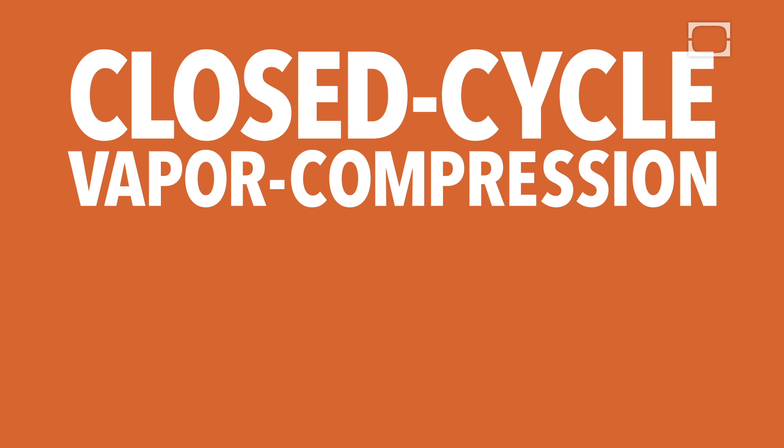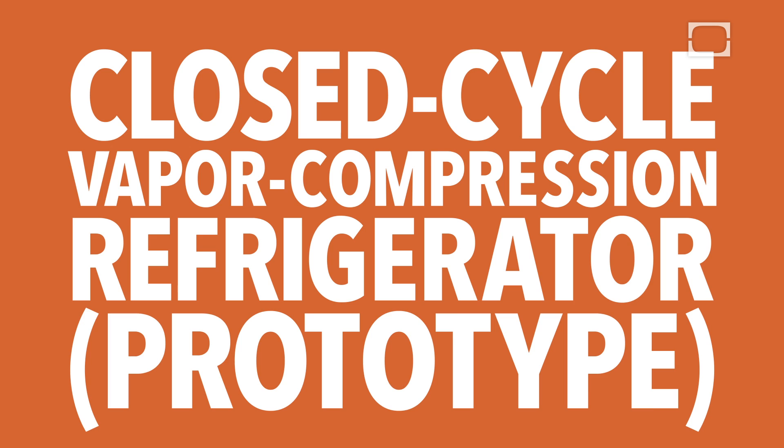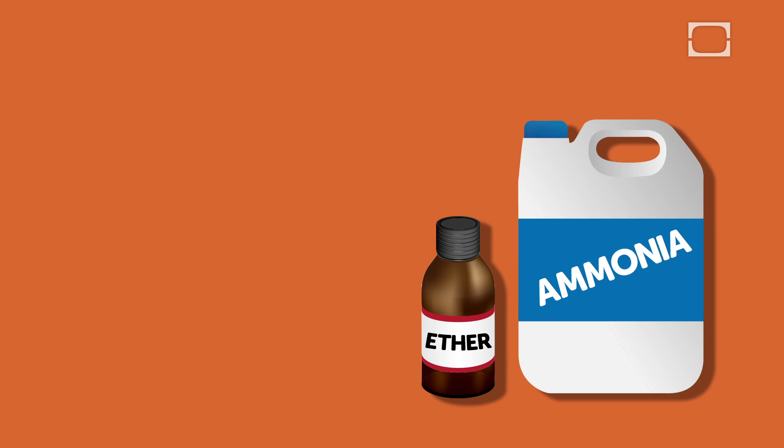Perkins' closed-cycle vapor compression refrigerator was a prototype not intended for domestic use, as it used dangerous substances like ether and ammonia in its cooling process.